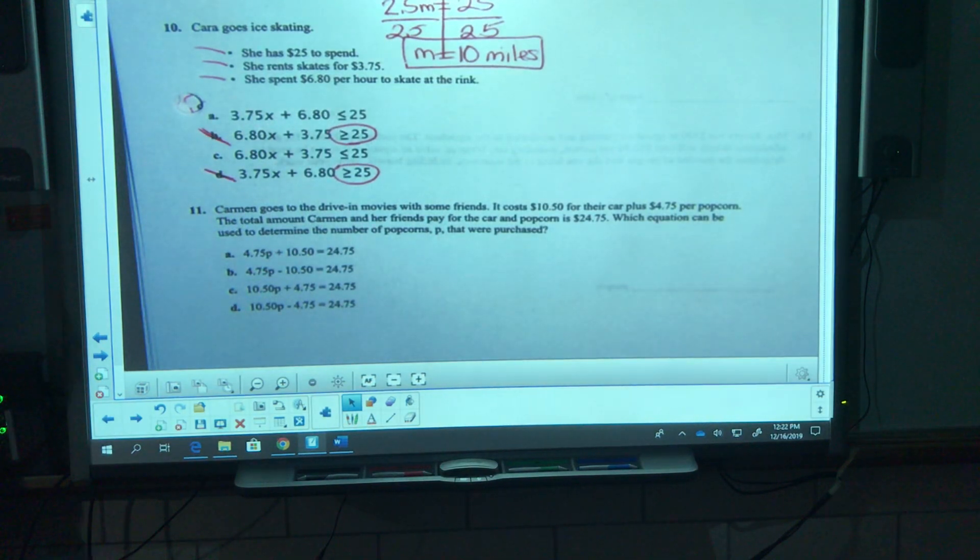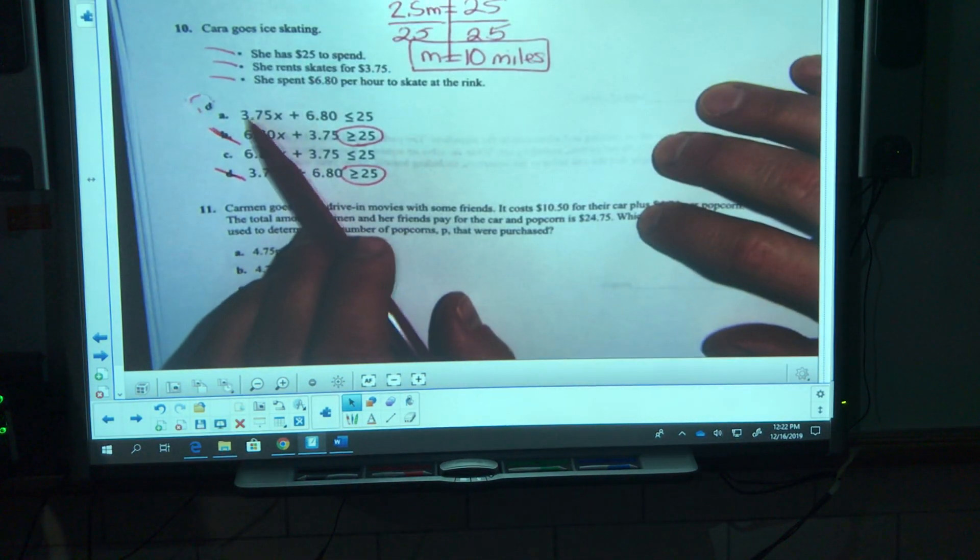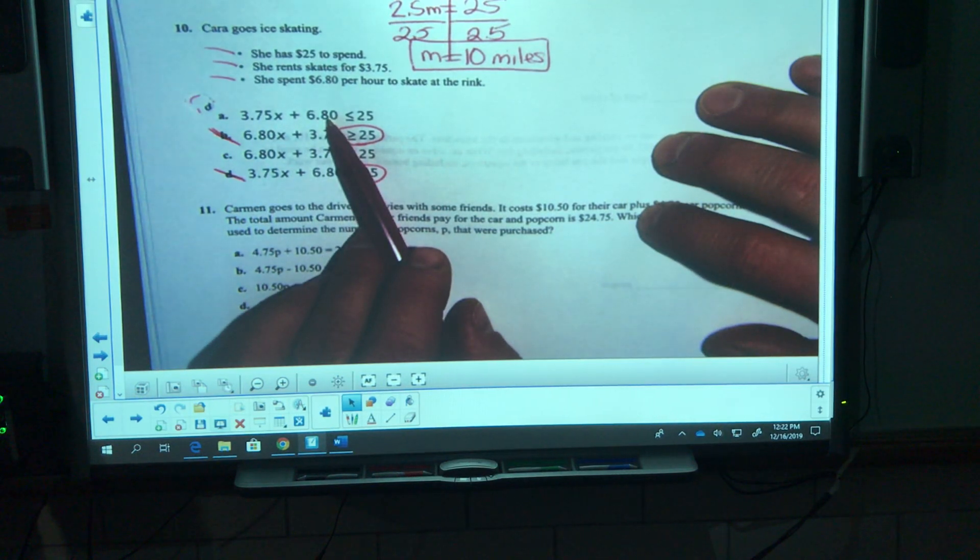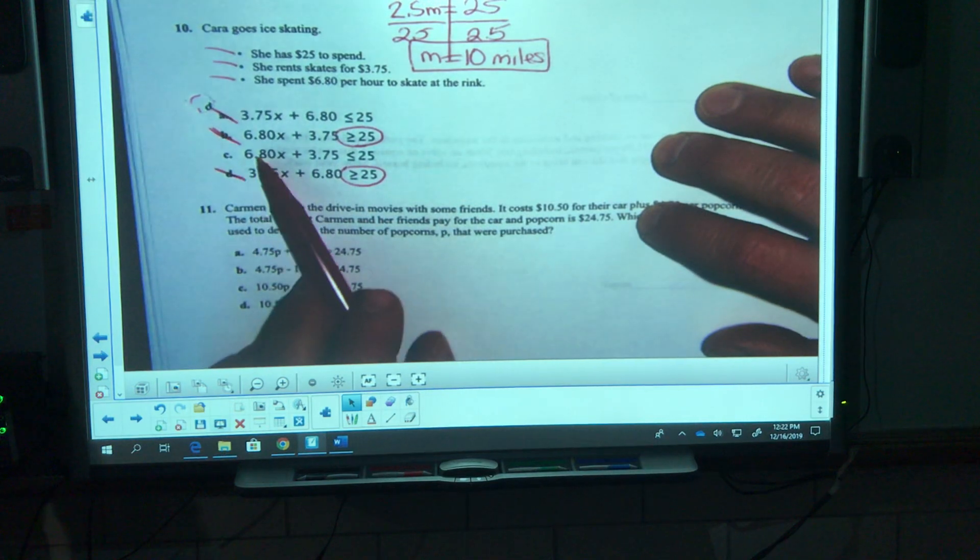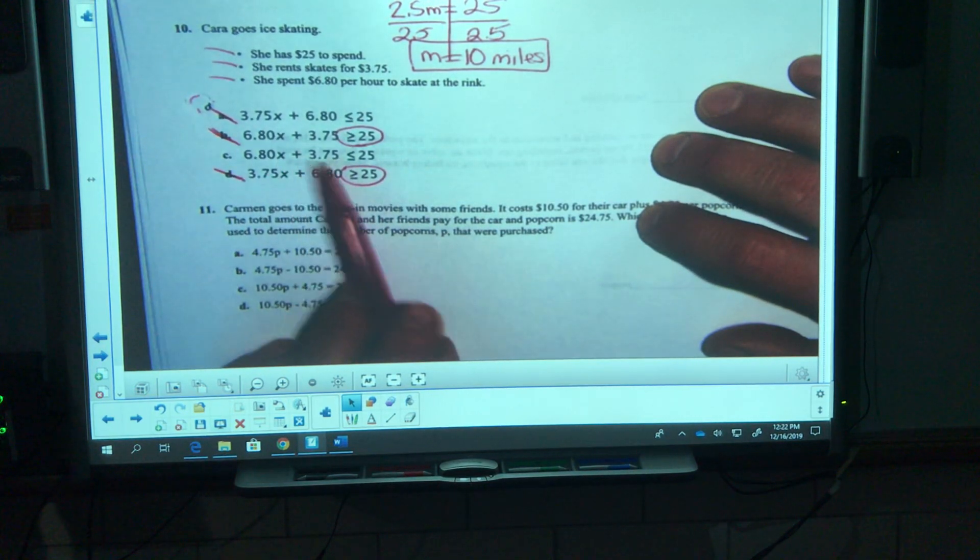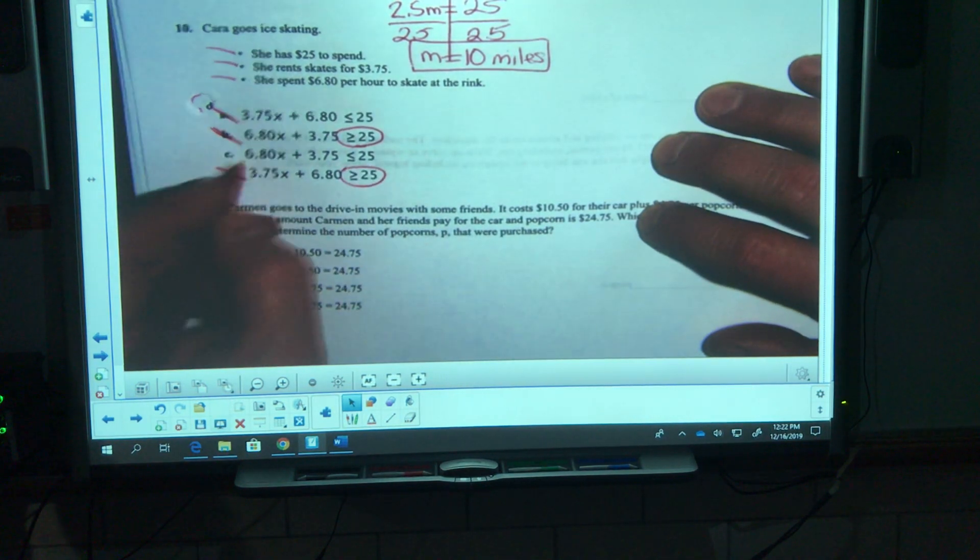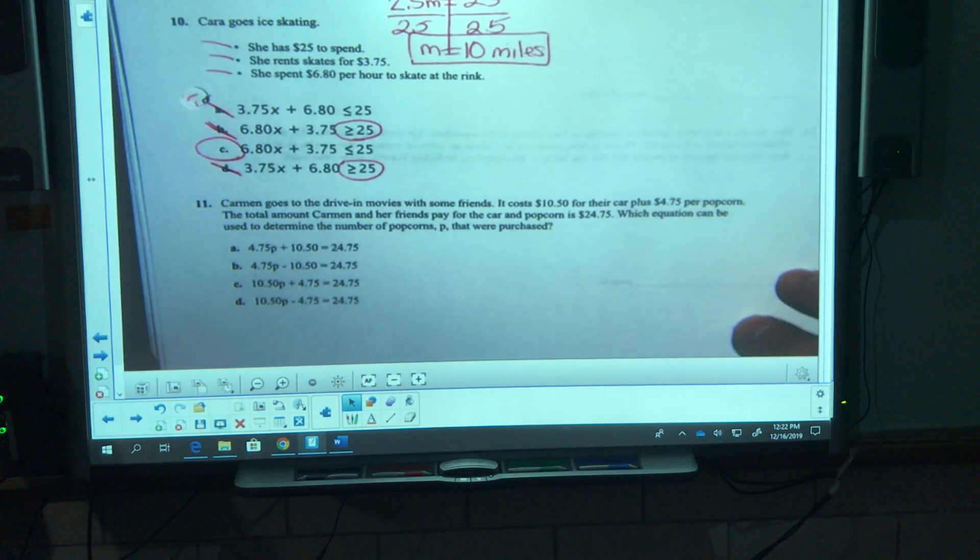Then they're going to have me think about renting the skates versus the per hour. This would say that it's 3.75 per hour and 6.80 to rent the skates. I don't think it's that. I think it's saying 6.80 per hour plus rent the skates, can't spend more than 25 dollars. I'm going with letter c.